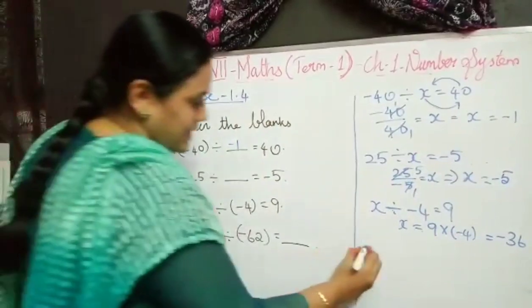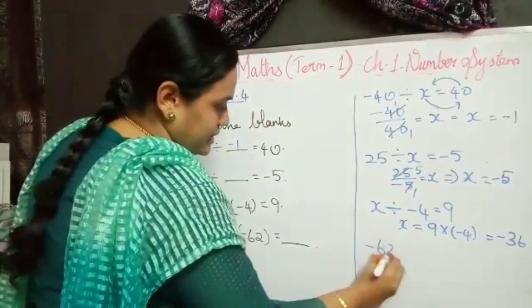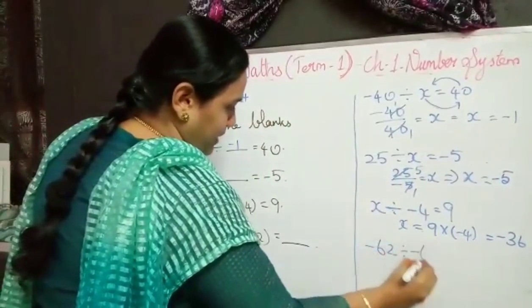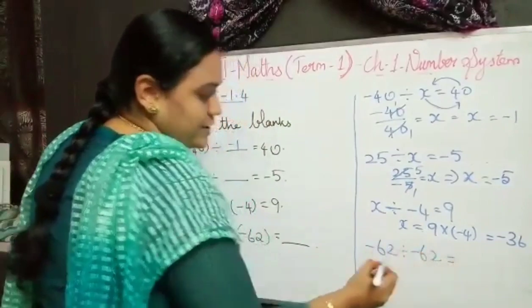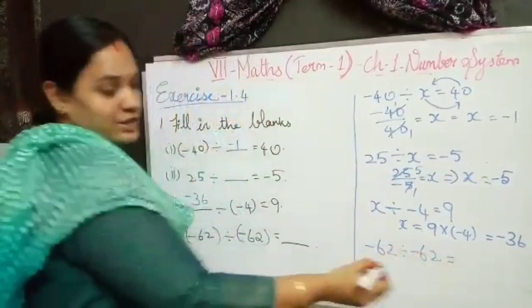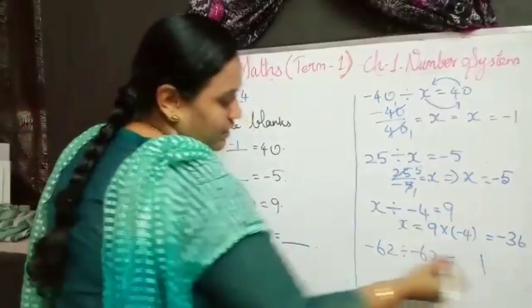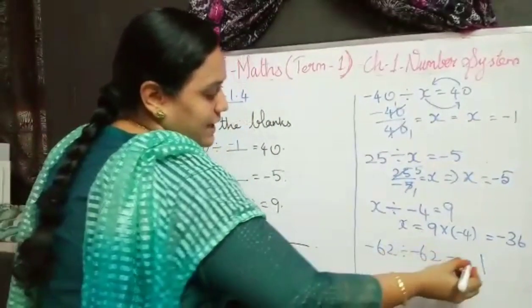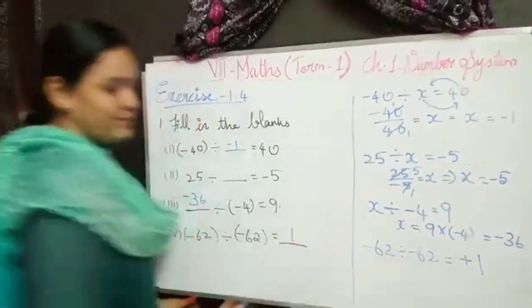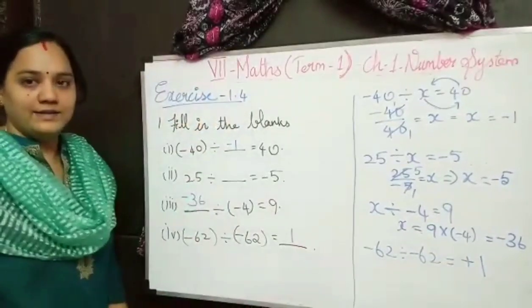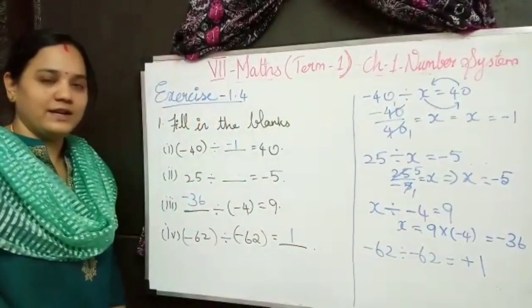The last one is minus 62 divided by minus 62. 62 divided by 62 is 1, same sign so plus 1. So 1 is my answer. Is it clear, children?